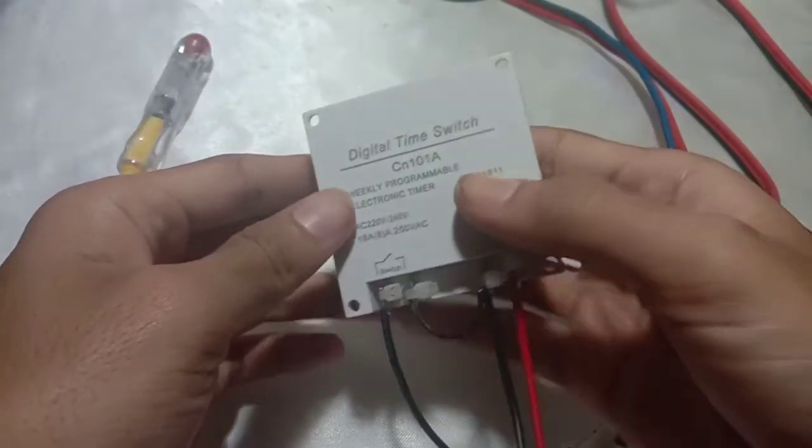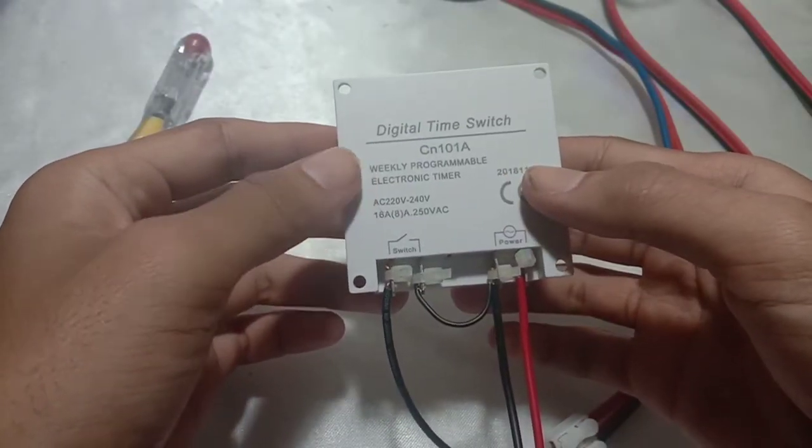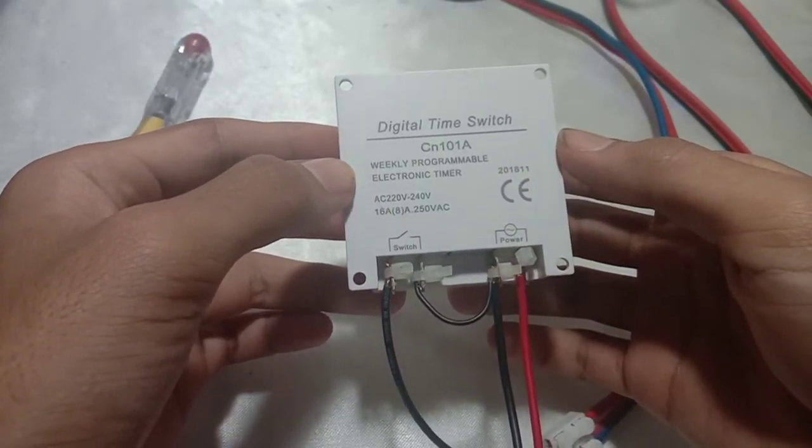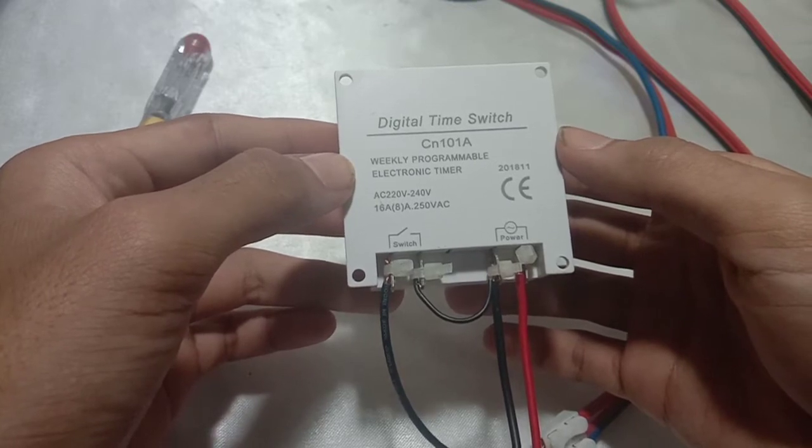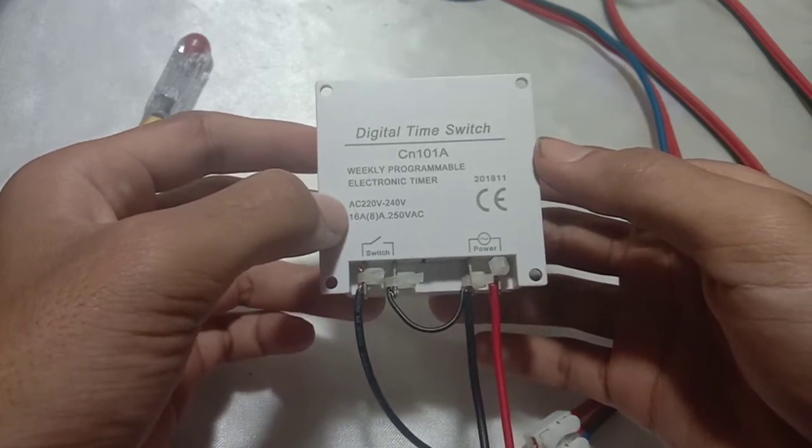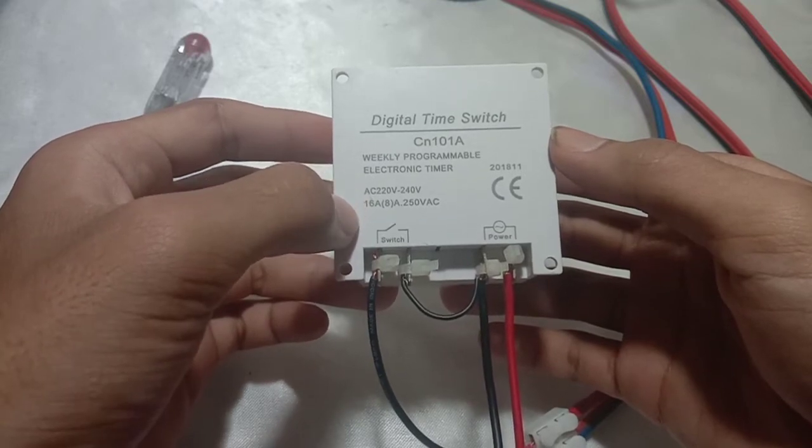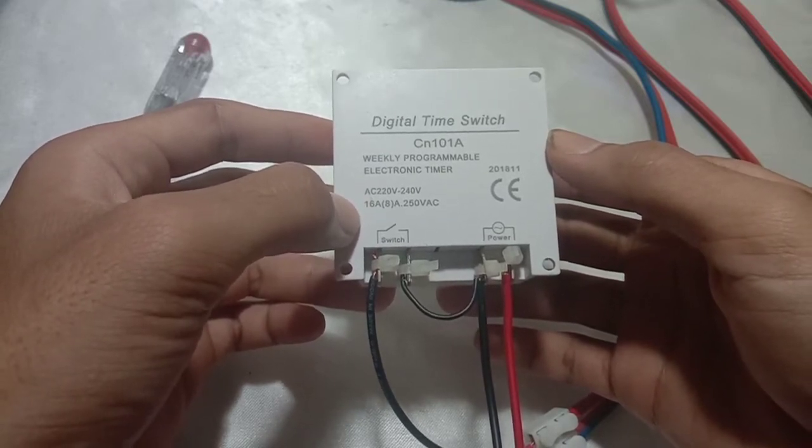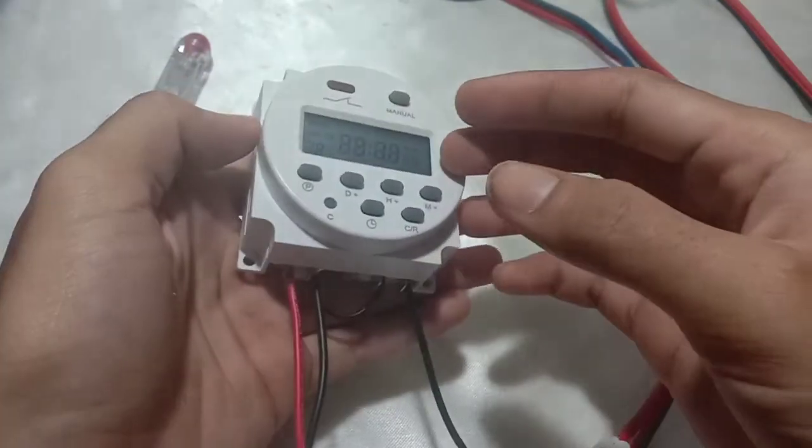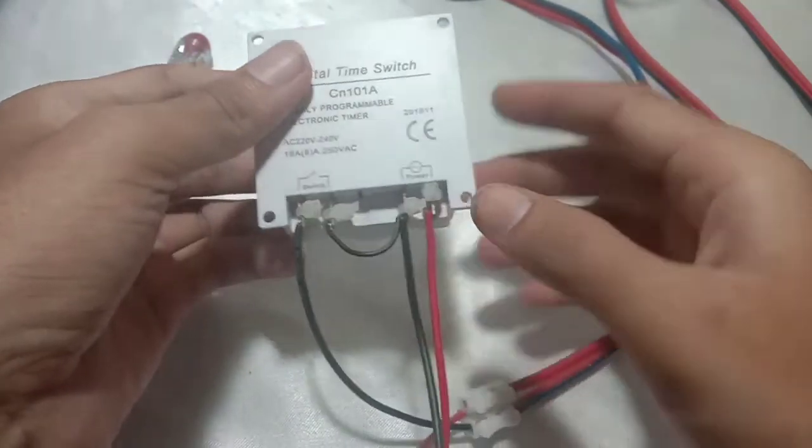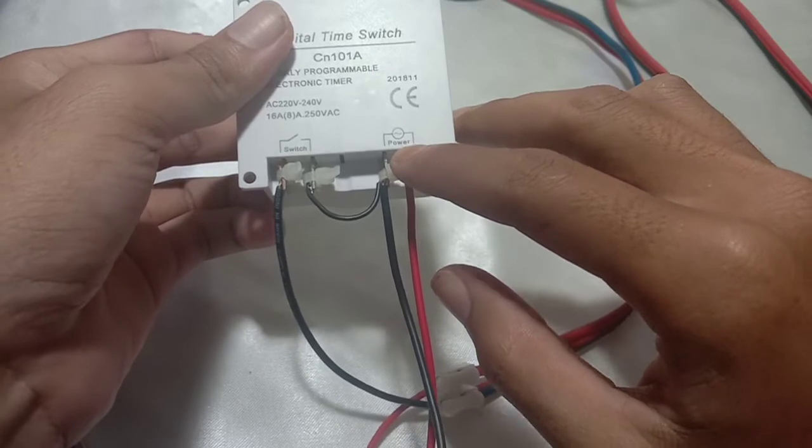Okay, we have here CN101A digital time switch, weekly programmable electric electronic timer, and it is AC 220 volt to 240 volt, 16 ampere. And this is how to wire. You can see this is the input power.